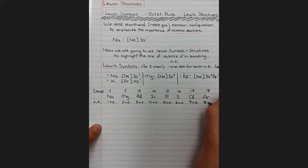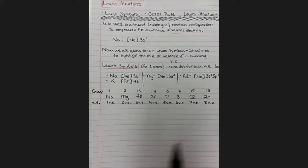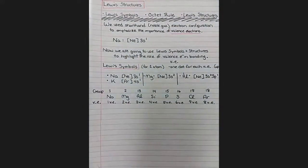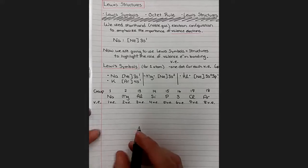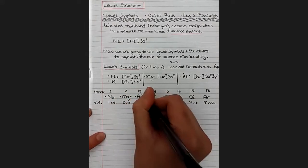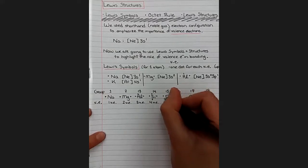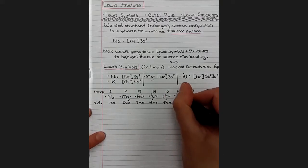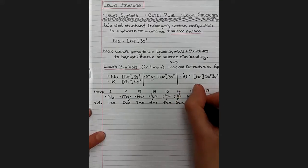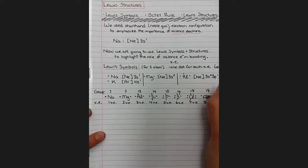So these main group elements in groups one and two and 13 through 18, we can easily predict the number of valence electrons that they have. And we can draw their Lewis symbol with dots. So aluminum has three, silicon has four with one dot on each side. Phosphorus has five, so that's the first one we're going to double up on one side. Sulfur has six, so we'll double up on two sides. Fluorine has seven, so we double up on three sides. And argon has eight, so we have a full valence shell with two electrons on all four sides.